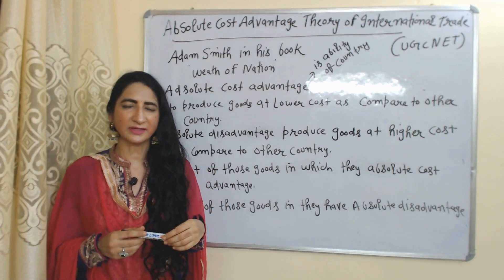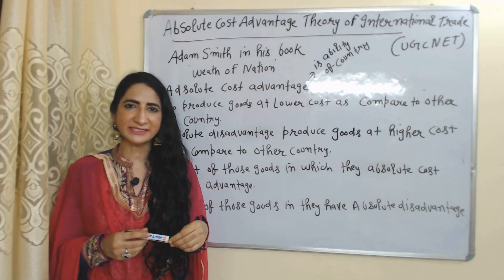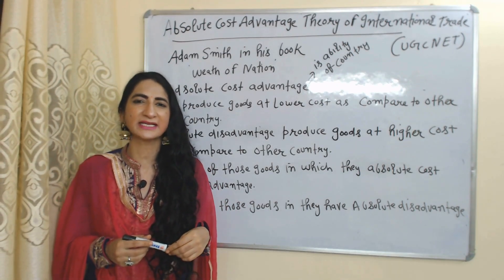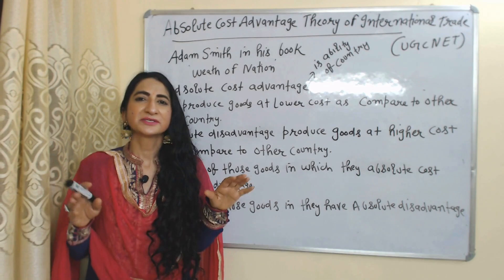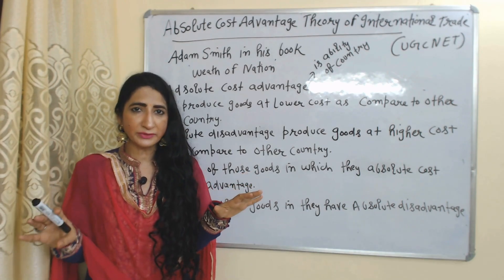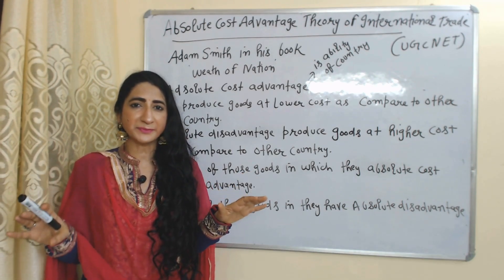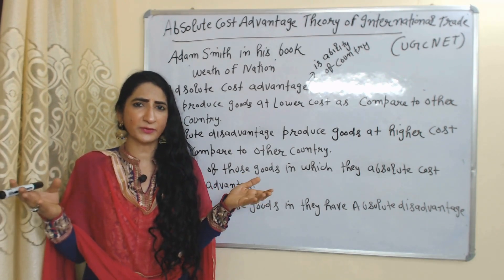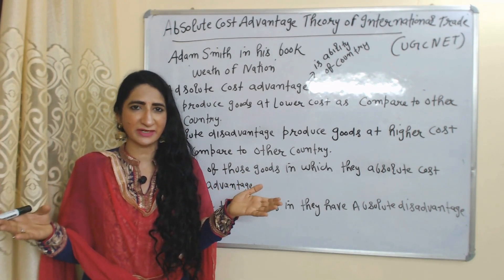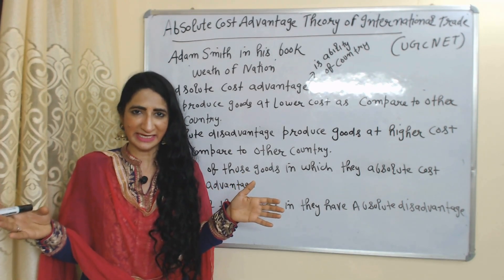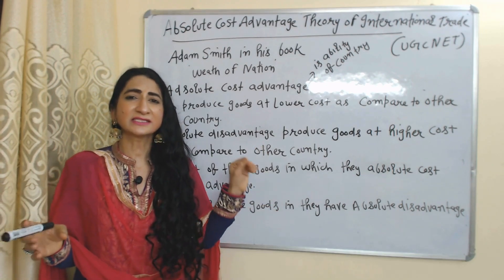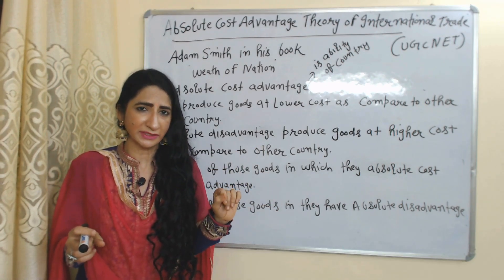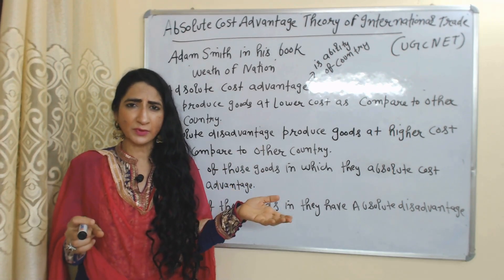Hello everyone, my name is Minnie Sati. I hope you all are staying healthy. Today we are going to talk about the Absolute Cost Advantage theory of international trade for UGC NET. This theory is given by Adam Smith in his book named Wealth of Nations.